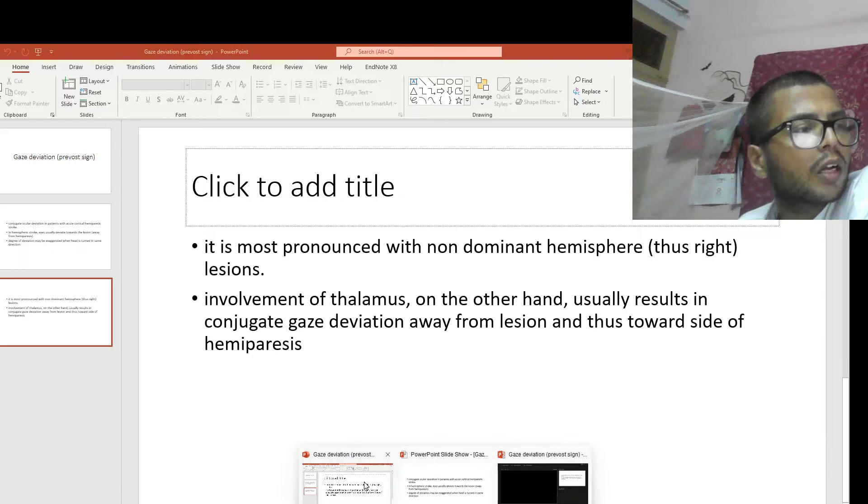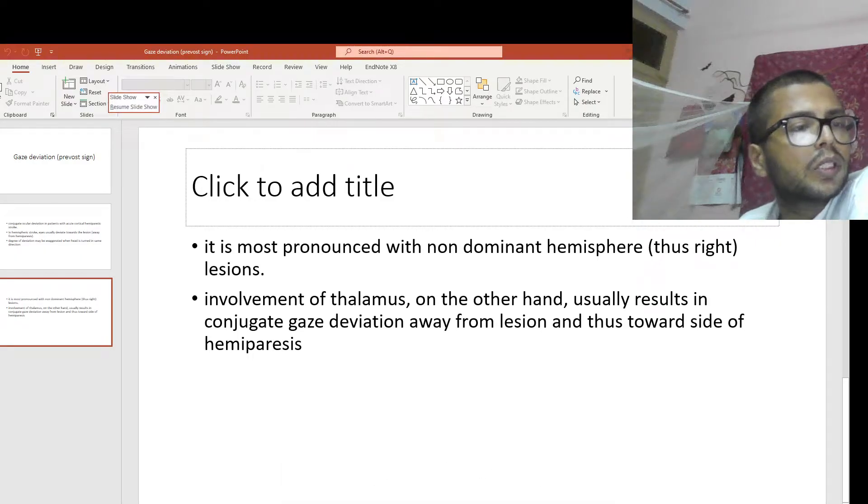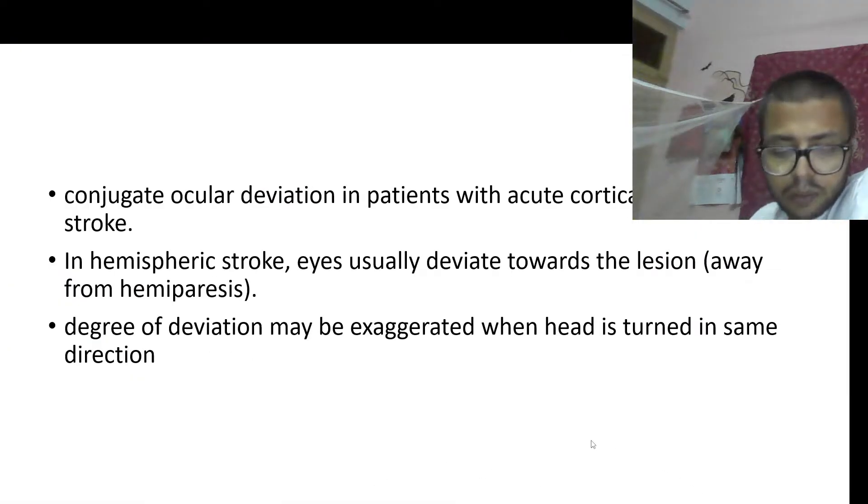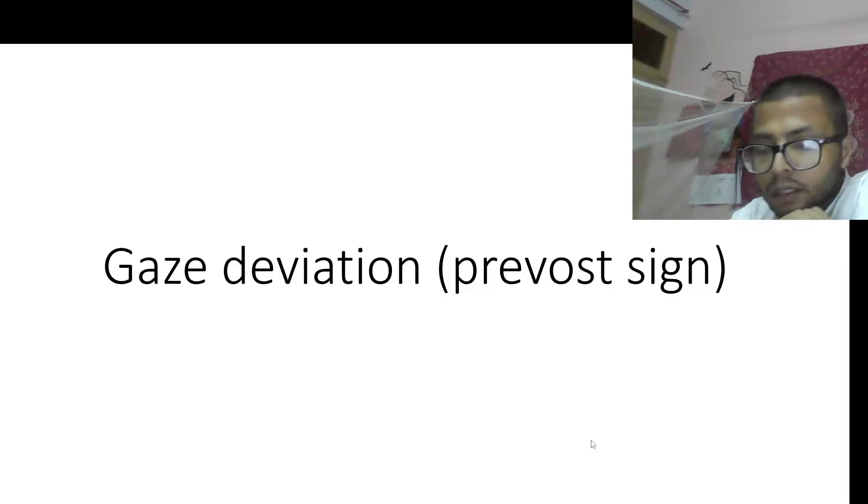Today we are going to discuss a sign called the Prevost sign, which is conjugate eye deviation towards the lesion side in a case of stroke. So let me draw the cerebral hemispheres for you. Let's suppose this is the right cerebral hemisphere and this is the left cerebral hemisphere.